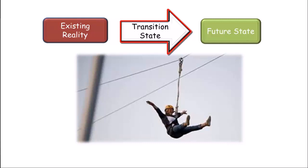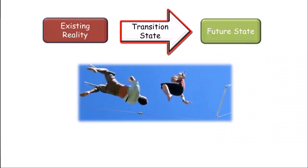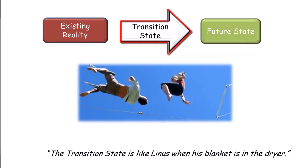I like this quote from futurist Marilyn Ferguson about the transition state. It's not so much that we are afraid of change or in love with the old ways, but it's the place in between we fear. It's like being between trapezes. It's like Linus when his blanket is in the dryer. And I think that adequately describes the discomfort people feel during the transition state.